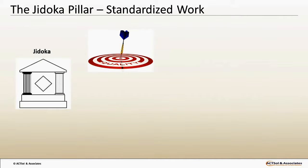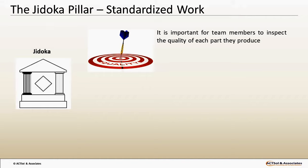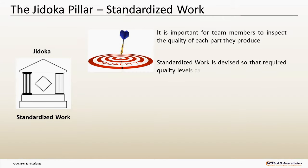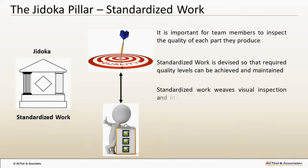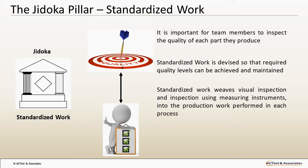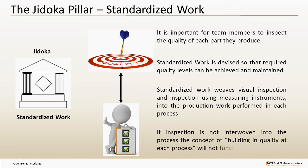It is important for team members to inspect the quality of each part they produce. One way to ensure this is strict observance of the standardized work established under the prevailing working conditions at each process. Standardized work is devised so that required quality levels can be achieved and maintained. Standardized work weaves visual inspection and inspection using measuring instruments into the production work performed in each process. If inspection is not interwoven into the process, the concept of building in quality at each process will not function properly.